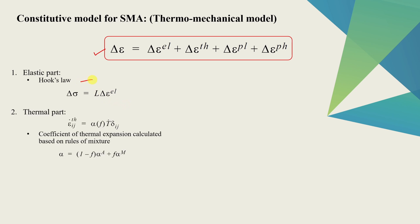Second part is thermal strain. This is also exactly same as we define for other materials. The only thing to note here is the coefficient of thermal expansion will be calculated based on rule of mixture. Hence we have to define the thermal coefficient of expansion separately for austenite and for martensite. And then MARC will calculate the overall coefficient of thermal expansion based on what is the volume fraction of each phase.